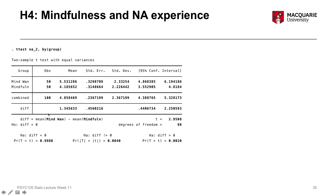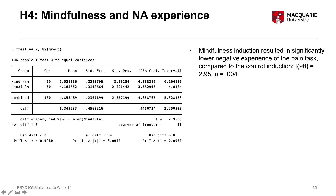Here's our t-test output. Looking at the two means, the average negative affect experience scores are higher in the control group — the mind-wandering group — compared to the mindfulness group, where scores appear lower. Looking at the t-statistic and p-value, we have a significant result with the p-value less than 0.05. Therefore the two mean scores are significantly different, and specifically the mindfulness group have significantly lower negative affect experiences compared to the mind-wandering group. The mindfulness induction resulted in significantly lower negative experience of the pain task compared to the control induction.